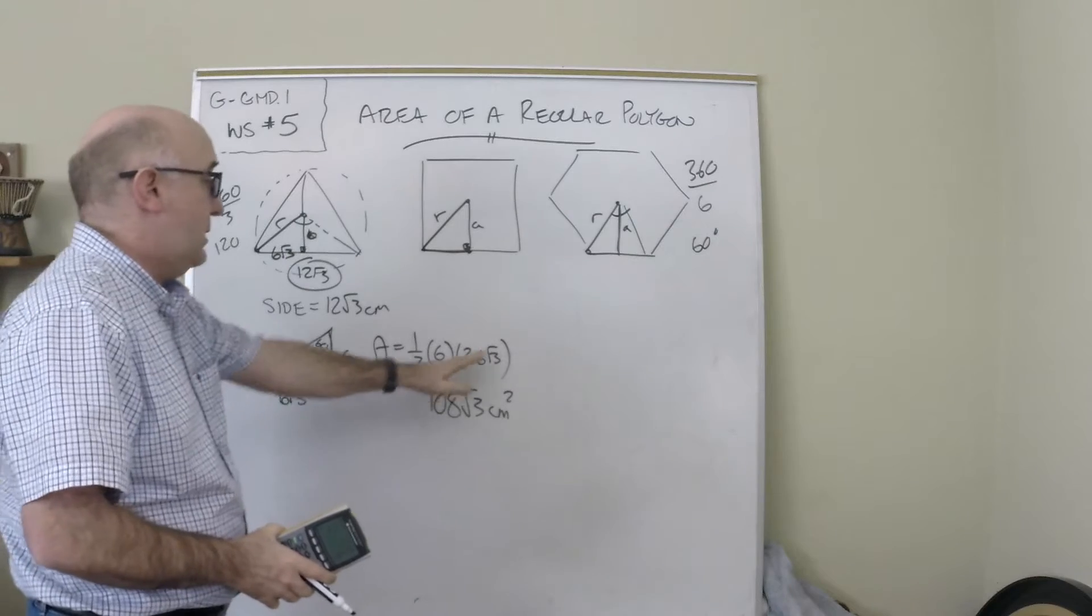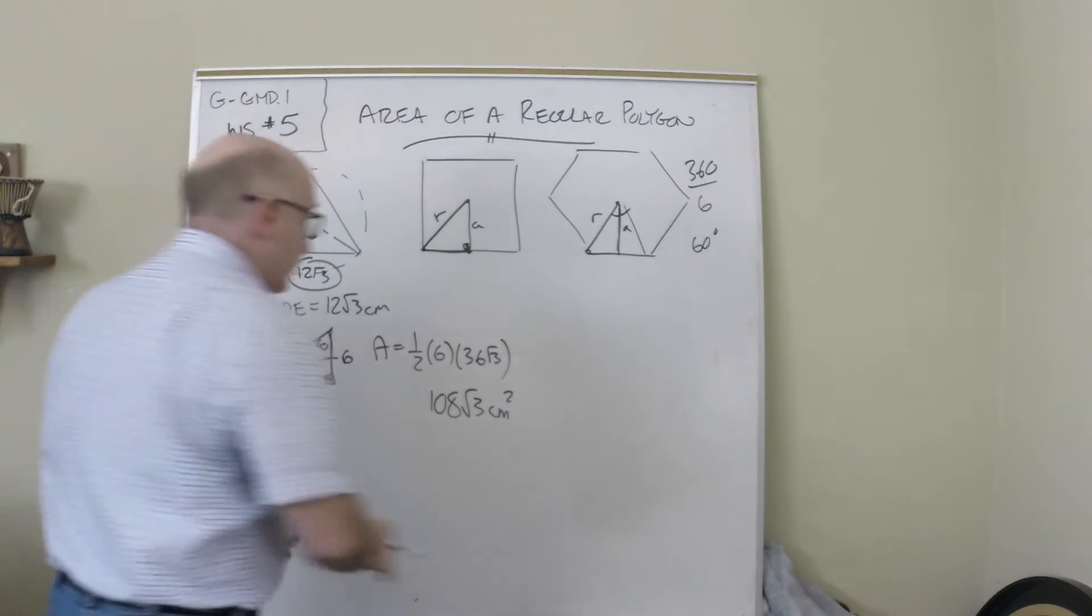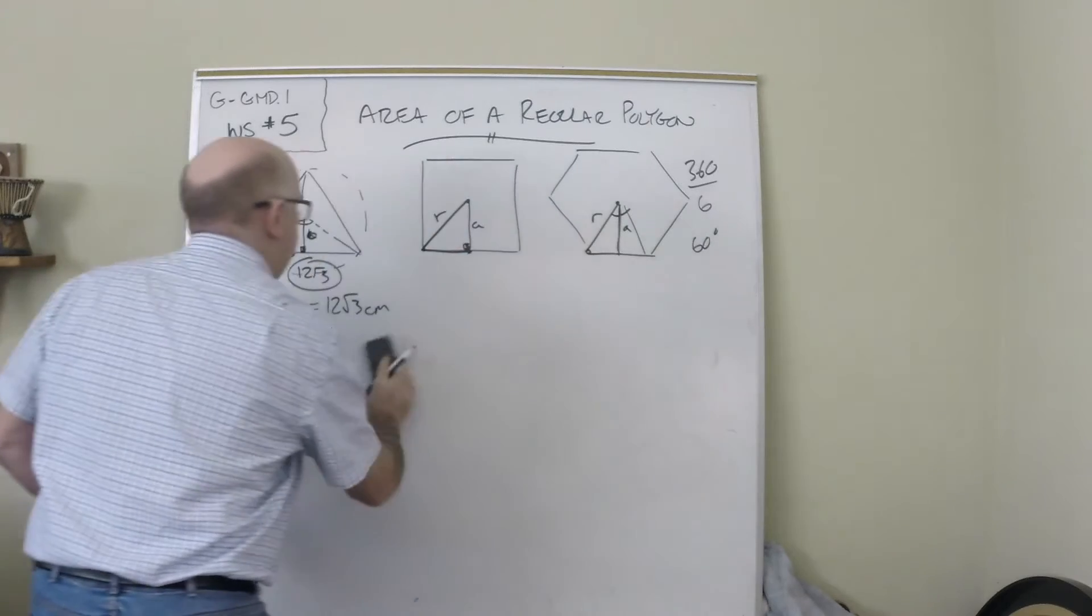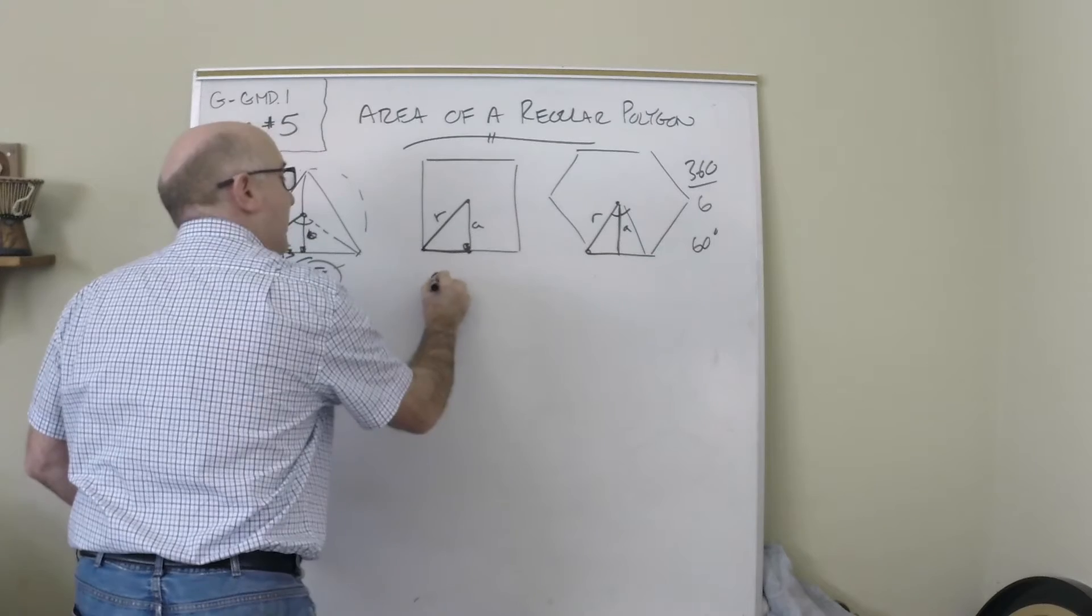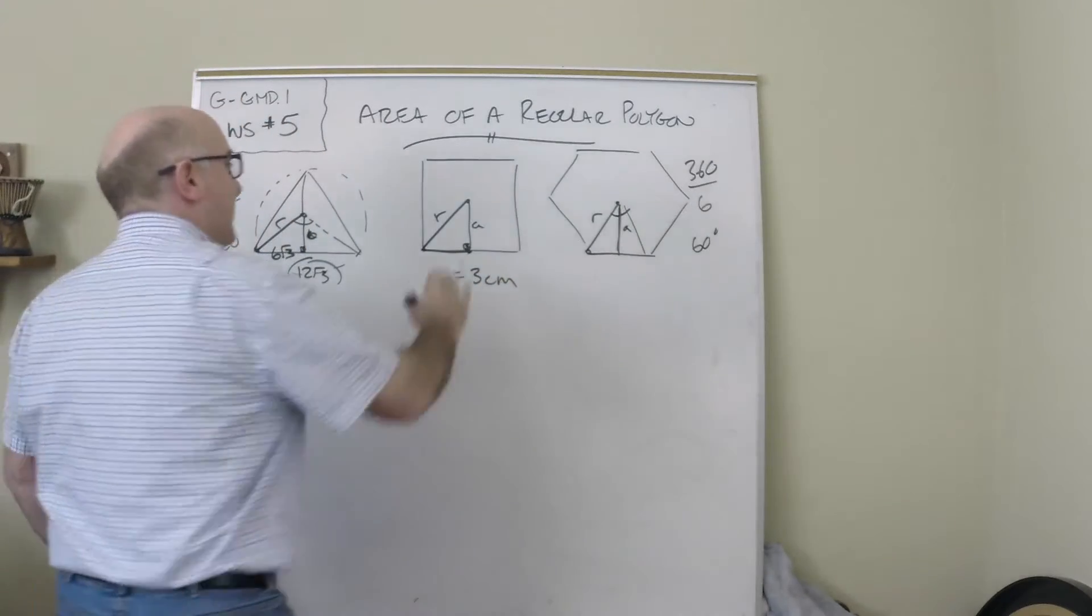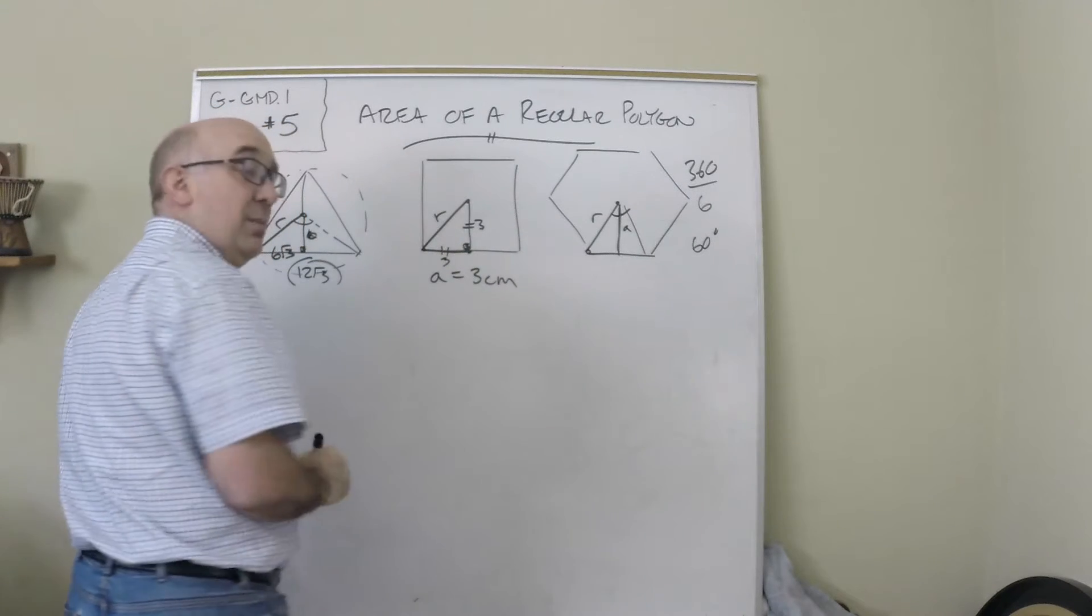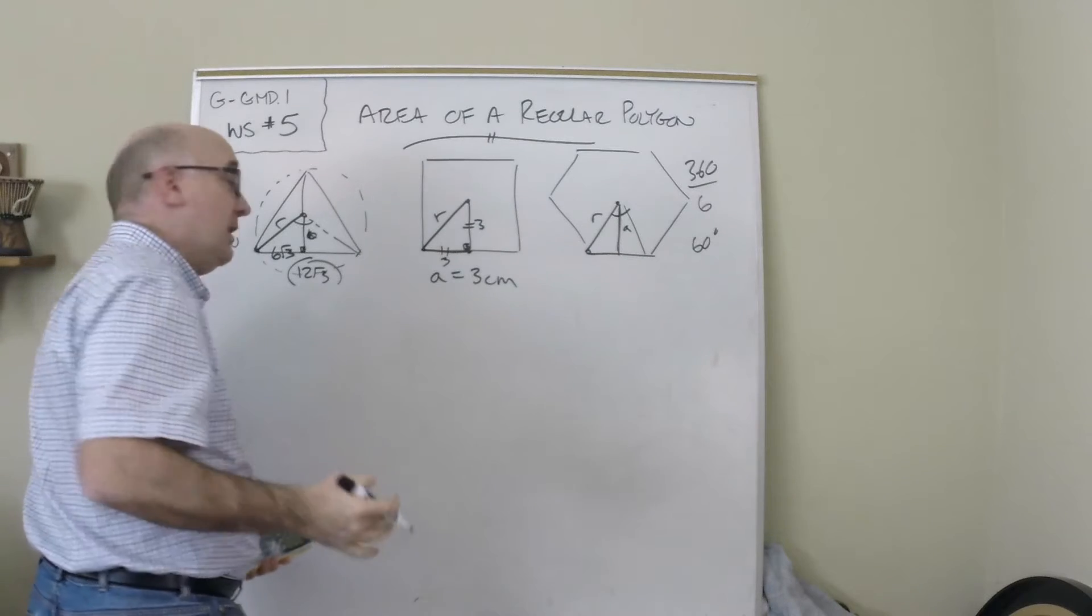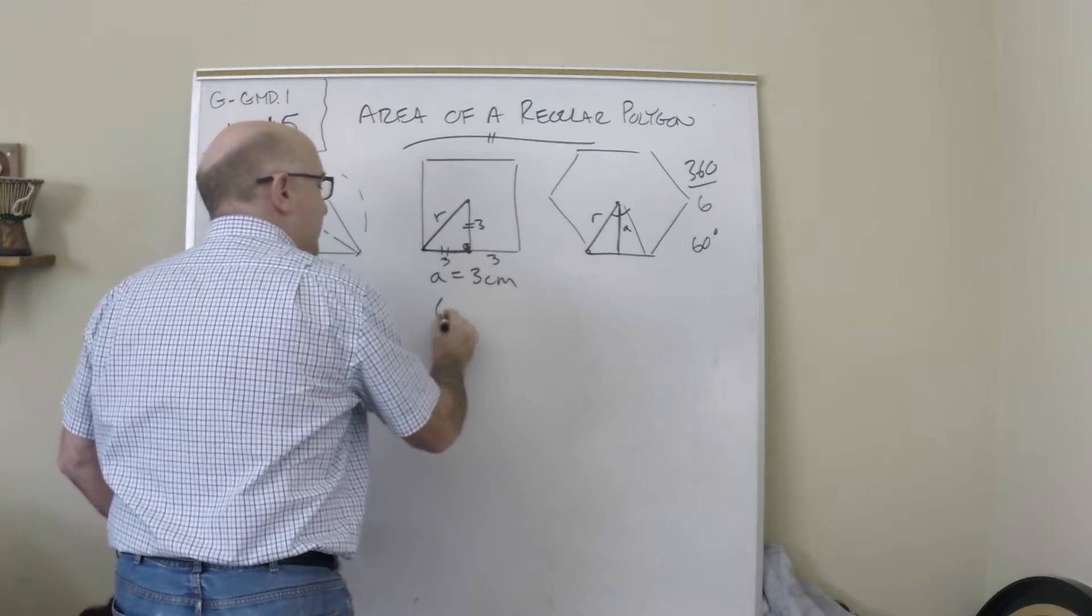Let's do it here for another example. Let's say our apothem is 3 centimeters. Now this actually is an easy question because the apothem, if it's 3, this is 3 as well, because those are equal sides of a 45-45, which makes this 3. So this is just 6 times 6 for 36.